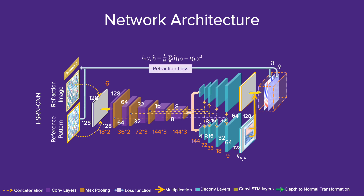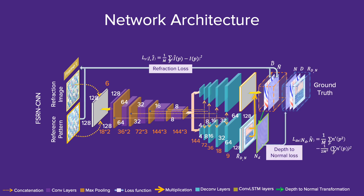Our CNN subnet takes the refraction image and reference pattern to estimate the depth and normal by analyzing refractive distortions. Our network considers physics-based loss that models the fluid refraction. We also use a depth-to-normal loss to enforce consistency between our depth and normal estimations. To make our network more robust for fluid bodies with various depths, we design a scale loss function.